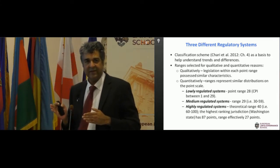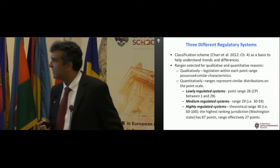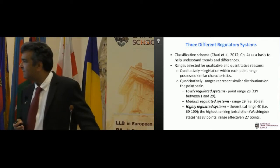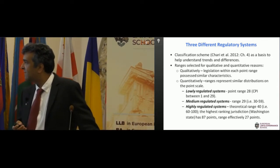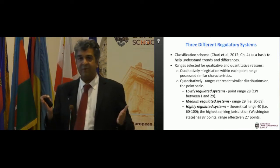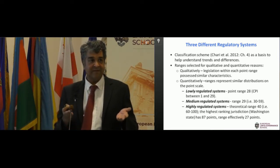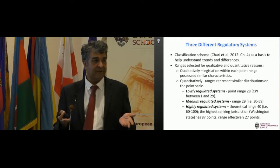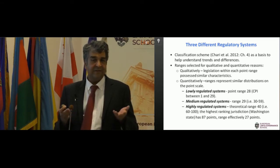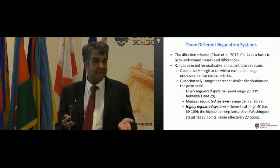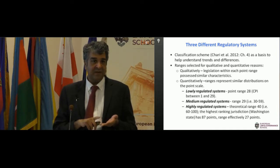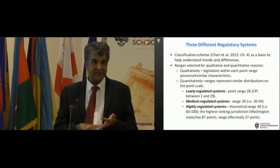More importantly, from the qualitative point of view, when we did a textual analysis of the different pieces of legislation, we could see there were striking similarities and differences between those found under 30 points, those between 30 and 60, and those over 60. You could see from a qualitative point of view that there is a very similar type of characteristics found. What we refer to is a threefold classification scheme of different types of regulatory environments.